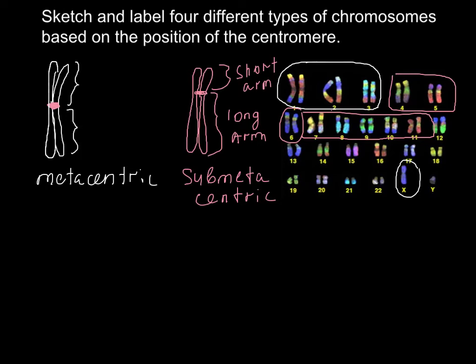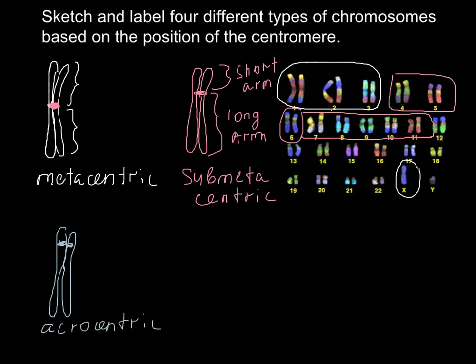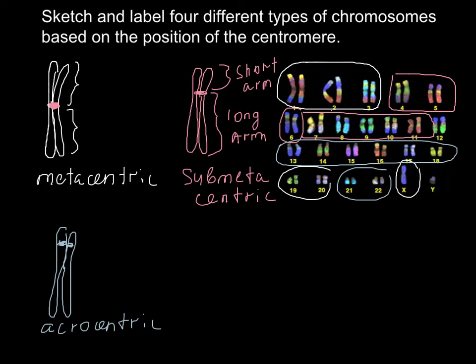The third type of chromosome is called acrocentric. This is the type of chromosome where the centromere is located near the very end of the chromosome, so it is called acrocentric.